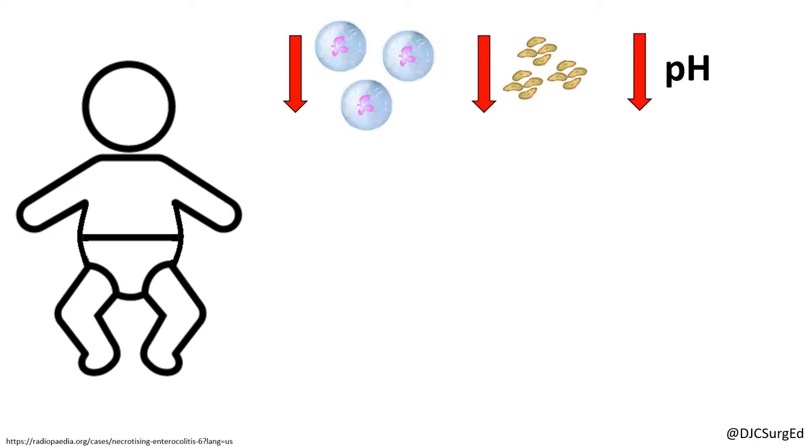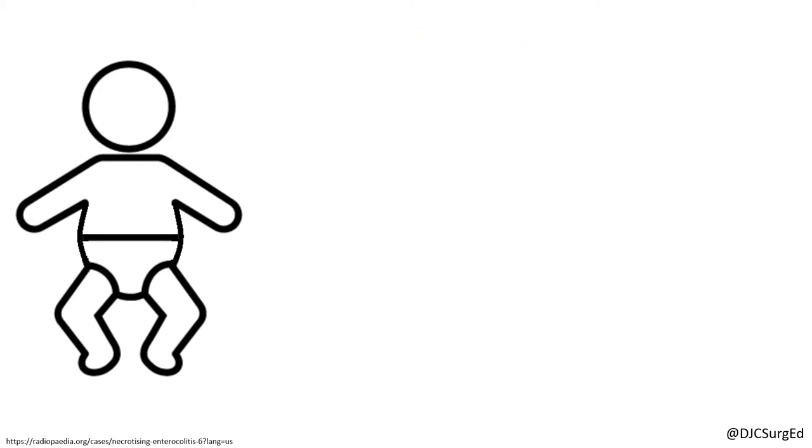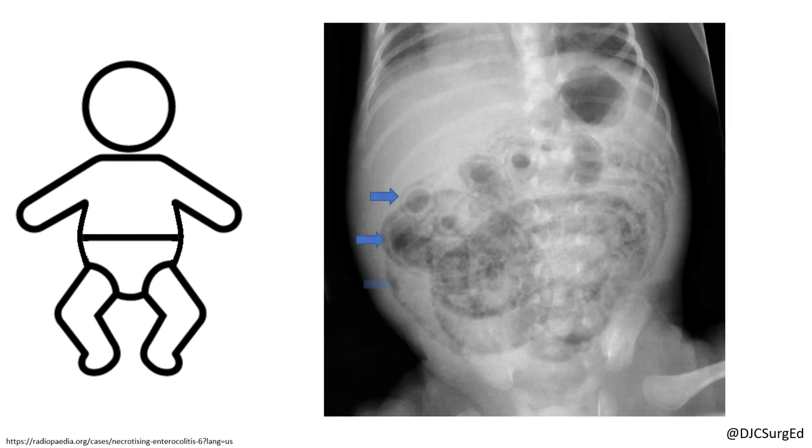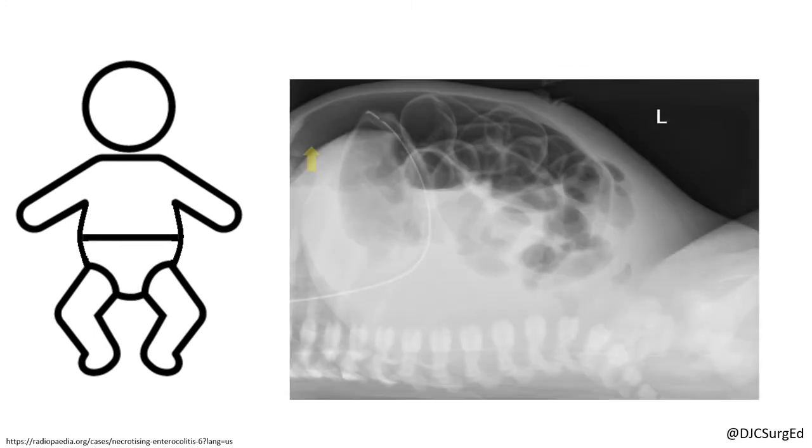The cornerstone of the diagnosis of NEC remains plain AP and left lateral decubitus radiographs. Findings can include a diffuse ileus and persistently dilated loops of bowel, pneumatosis intestinalis, portal venous gas, or pneumoperitoneum.